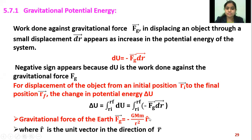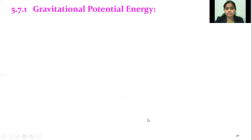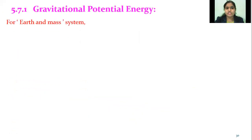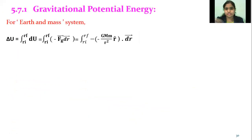A unit vector is a vector having unit magnitude in a particular direction. For the Earth-mass system, delta u equals the integration of du from ri to rf. The integration of one upon r squared equals minus one upon r.